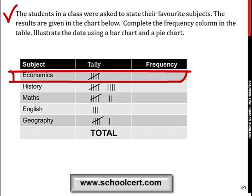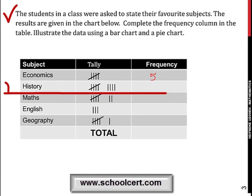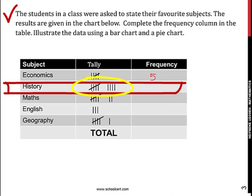The first subject is economics and the tally is 1, 2, 3, and 4, and then we have a stroke across it which represents 5. So the frequency here is 5. For history, we have 1, 2, 3, 4, 5, 6, 7, 8, 9. So we write down 9.